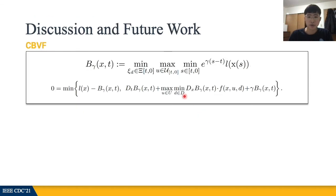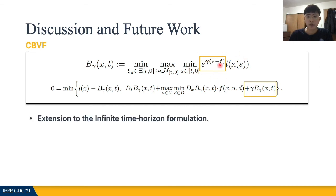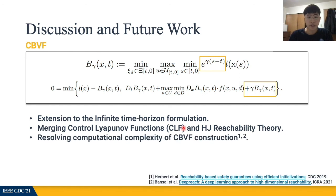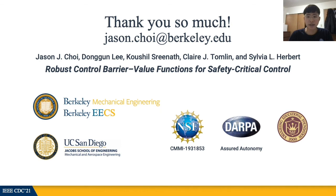To sum up, in this paper we introduced the new notion of a safety value function called the Control Barrier Value Function, which is an extension of the original Hamilton-Jacobi reachability-based value function by introducing a maximal decay rate gamma to the formulation. The current ongoing extension of our work is to the infinite time horizon setting — similar to how we merged reachability and CBFs, we aim to merge the theory of reachability and CLFs. Finally, since the numerical methods in the Hamilton-Jacobi literature for computing CBVFs are computationally heavy, resolving this issue is also very important. We are interested in using neural certificate-based reachability computation or deep learning-based approximations of the value functions. Thank you for listening, and questions are greatly welcomed.